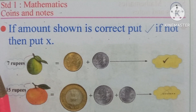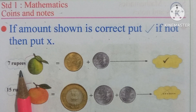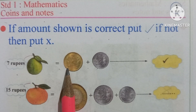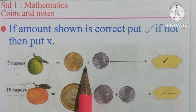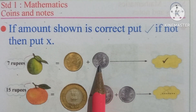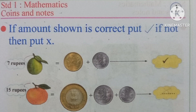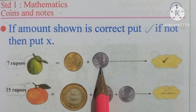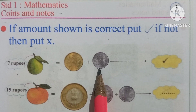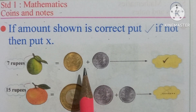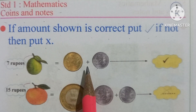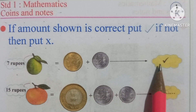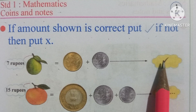Its price is 7 rupees, which equals a coin of 5 rupees plus a coin of 2 rupees. Addition of 5 plus 2 is 7. This addition of coins is correct, so we put the correct sign here.